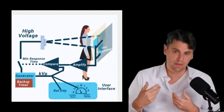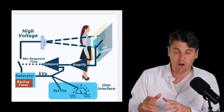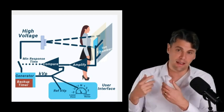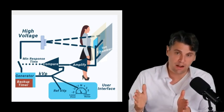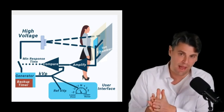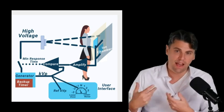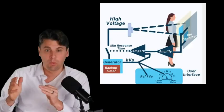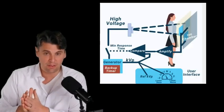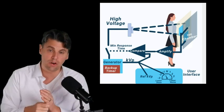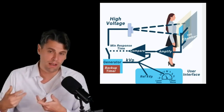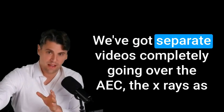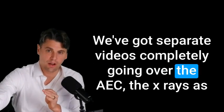Alternatively, the systems now have ways that we call automated exposure control. And this automated exposure control actually takes a measurement during the acquisition to see how many x-rays have actually passed through the patient, and thus how good a quality of the x-ray image we're going to have at that given time. Once there's enough x-rays that have passed through, then the automated exposure control says turn off the acquisition. So automated exposure control just sets the duration of your x-ray acquisition. We've got separate videos completely going over the AEC.